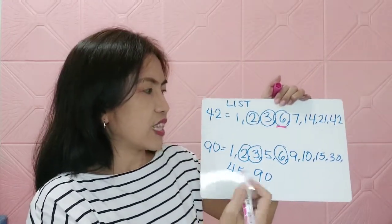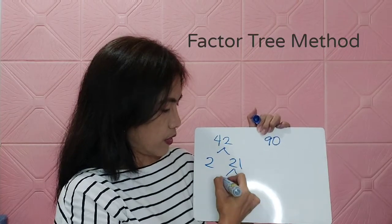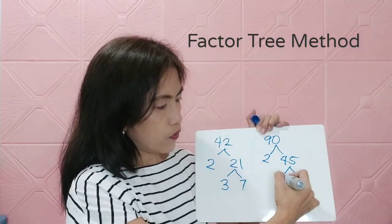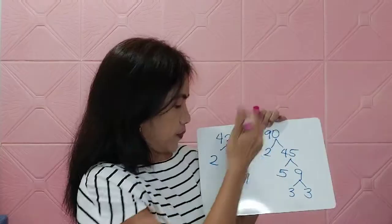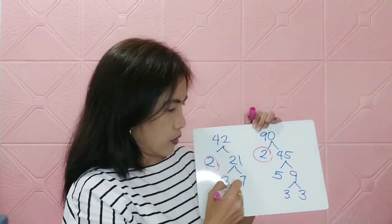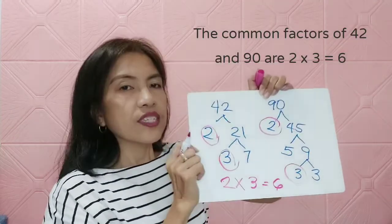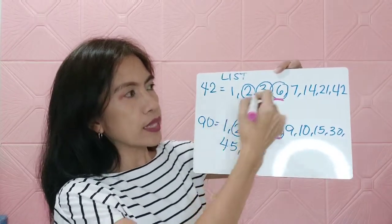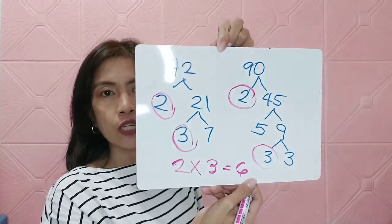For 42 and 90 using prime factorization: factoring 42 gives us 2 × 3 × 7, and factoring 90 gives us 2 × 3 × 3 × 5. The common prime factors are 2 and 3, so 2 × 3 = 6. That is the same result as the listing method — the GCF of 42 and 90 is 6.